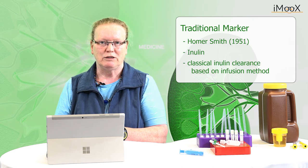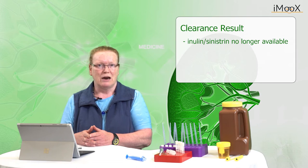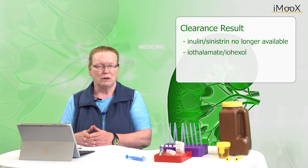He developed a classical inulin clearance based on an infusion method. The result for the clearance was infusion rate divided by plasma concentration. Unfortunately, inulin as well as sinistrin and inulin-like polyfructosan are no longer available. However, the classical approach to GFR measurement can also be performed by the use of iotalamate or iohexol, which are iodine contrast mediums regularly used in radiology.